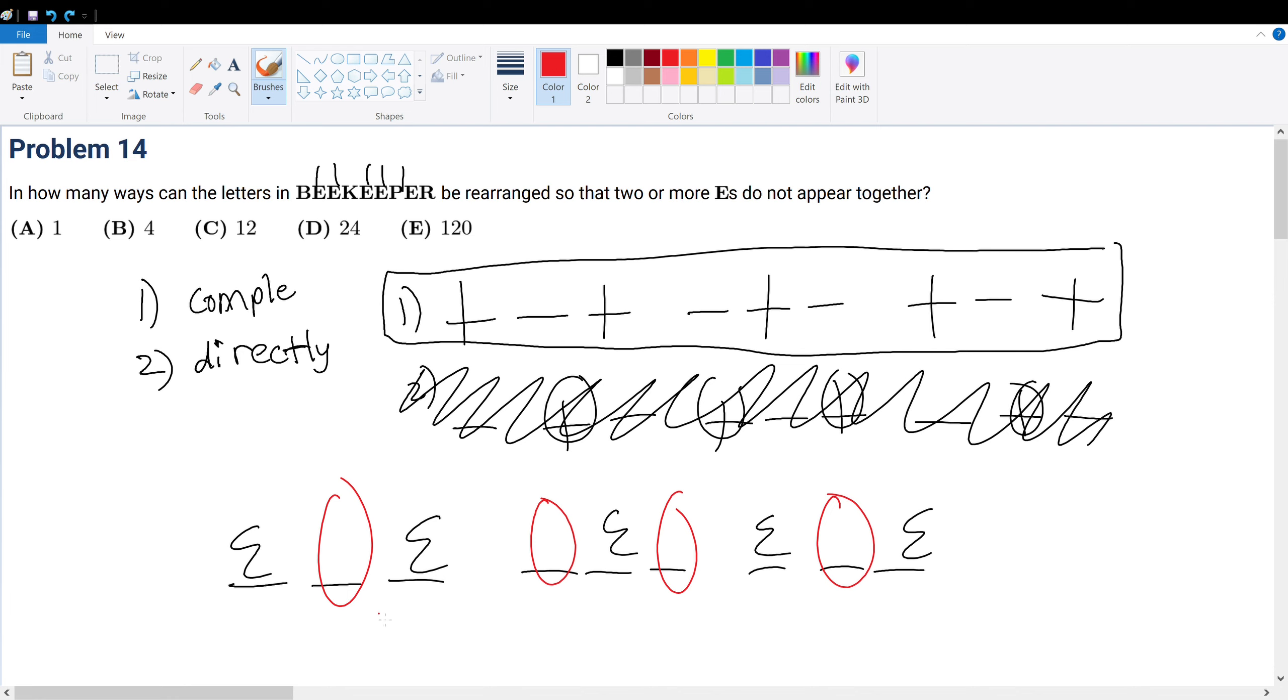So what possible letters can we put there? We can put a B, a K, a P, or an R. So that means we have four choices for this one, but after we choose one choice such as B, we have three more choices. Then we have two more choices, and then we have one more choice. So four times three times two times one will be your answer and that's equal to 24. And that means your answer choice is answer choice D.